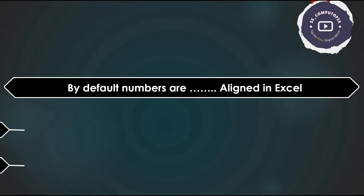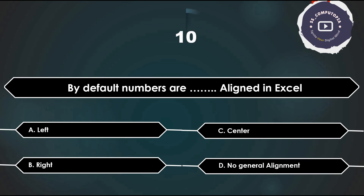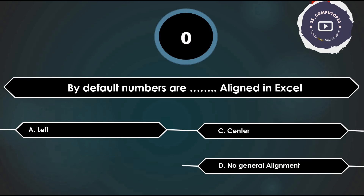By default, numbers in a row are aligned in Excel — left, right, center, or general alignment? Answer is Right. Numbers in Excel are right-aligned and text is left-aligned.